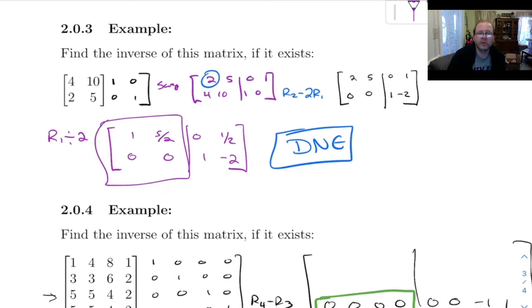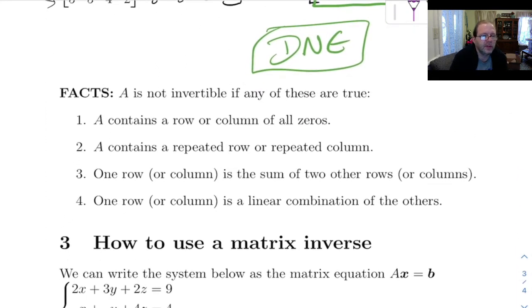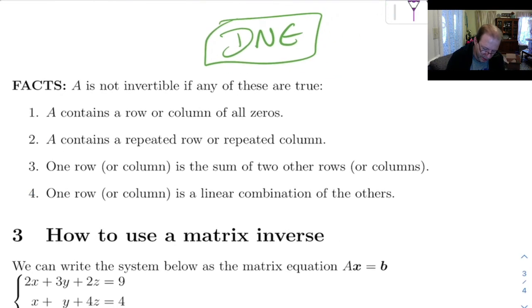So there are some rules we have that'll tell us when a matrix doesn't have an inverse. So A is not invertible if any of these things are true. And it turns out these things are all kind of, well, they're not equivalent to each other, but each time I go from one to the next, it's getting a little bit more general.